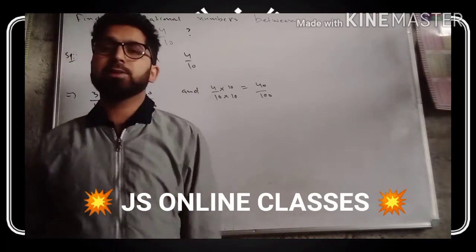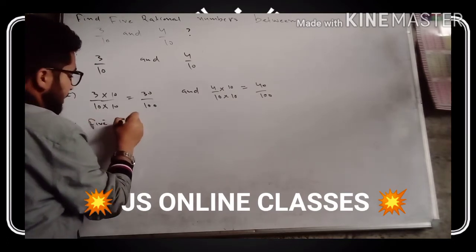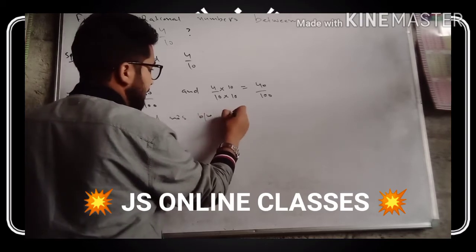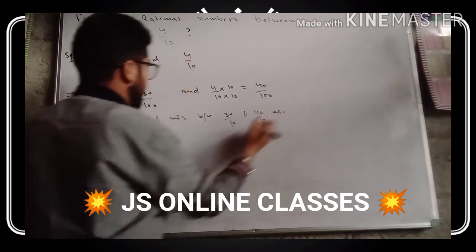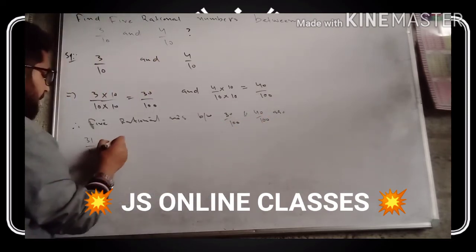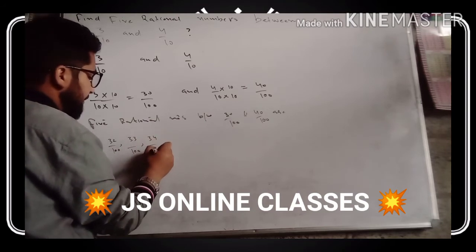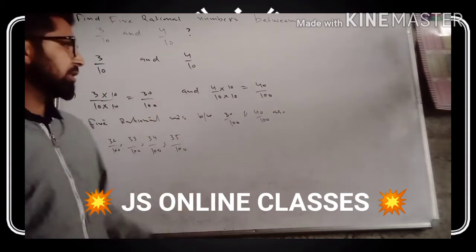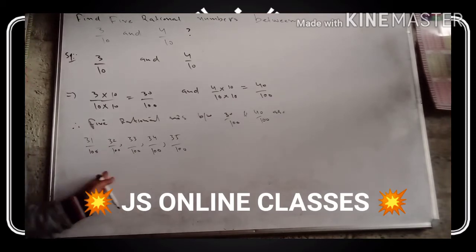Therefore, five rational numbers between three by ten and four by ten — that is, between thirty by hundred and forty by hundred — are: thirty-one by hundred, thirty-two by hundred, thirty-three by hundred, thirty-four by hundred, and thirty-five by hundred. We can write many rational numbers between thirty by hundred and forty by hundred, but here we find only five. You can take a screenshot.